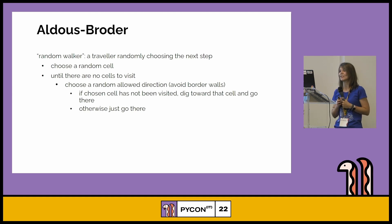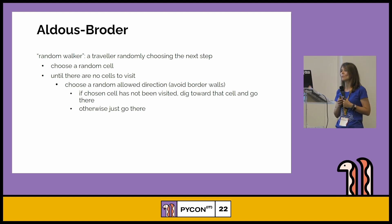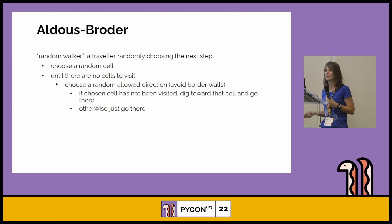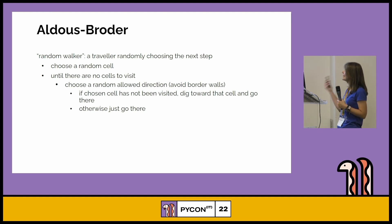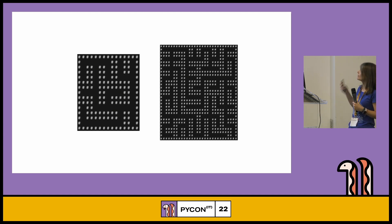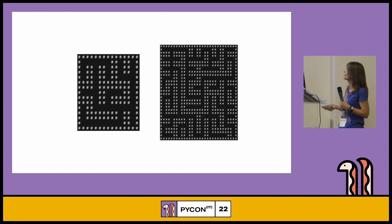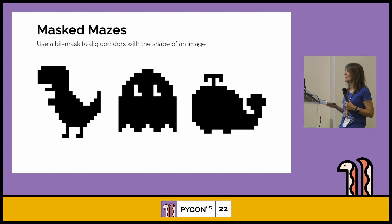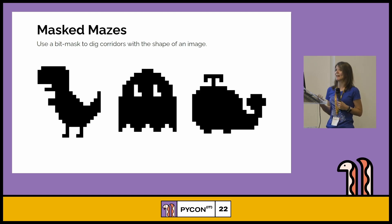With the Aldous-Broder algorithm, you have a traveler who randomly chooses the next step. You choose a random cell, and until there are no cells left to visit, you choose a random allowed direction avoiding border walls. If the chosen cell has not been visited, you dig toward that cell and go there; otherwise you just go there. The result is a maze with no bias — none of those corridors — so it looks much cleaner.